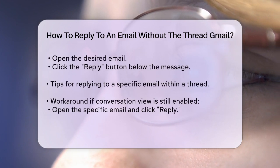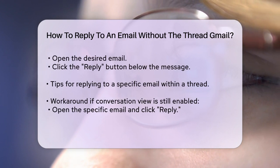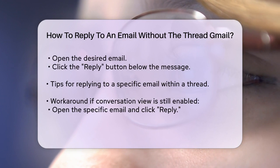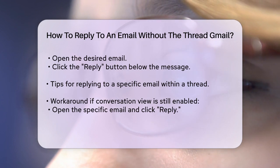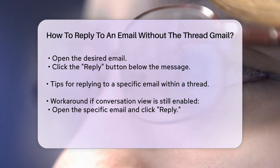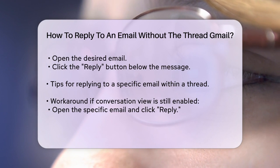If you want to reply to a specific email within a thread, make sure you're replying to that particular email and not the entire thread. If you still see emails grouped together because you haven't disabled the conversation view yet, here's a trick: when you click Reply, make sure you're responding to the individual email by opening that specific email and then clicking the Reply button.